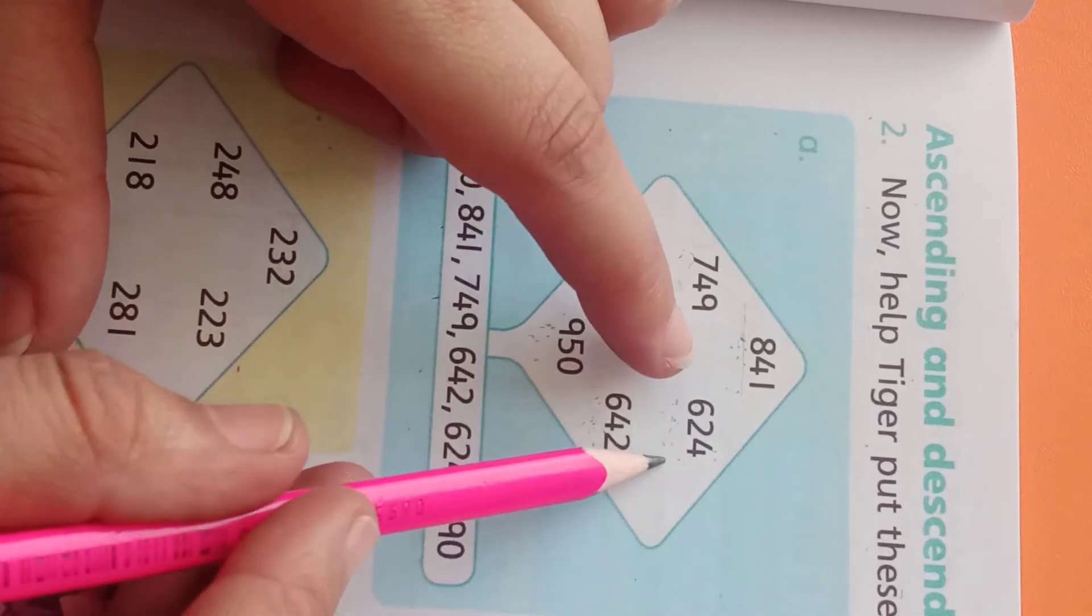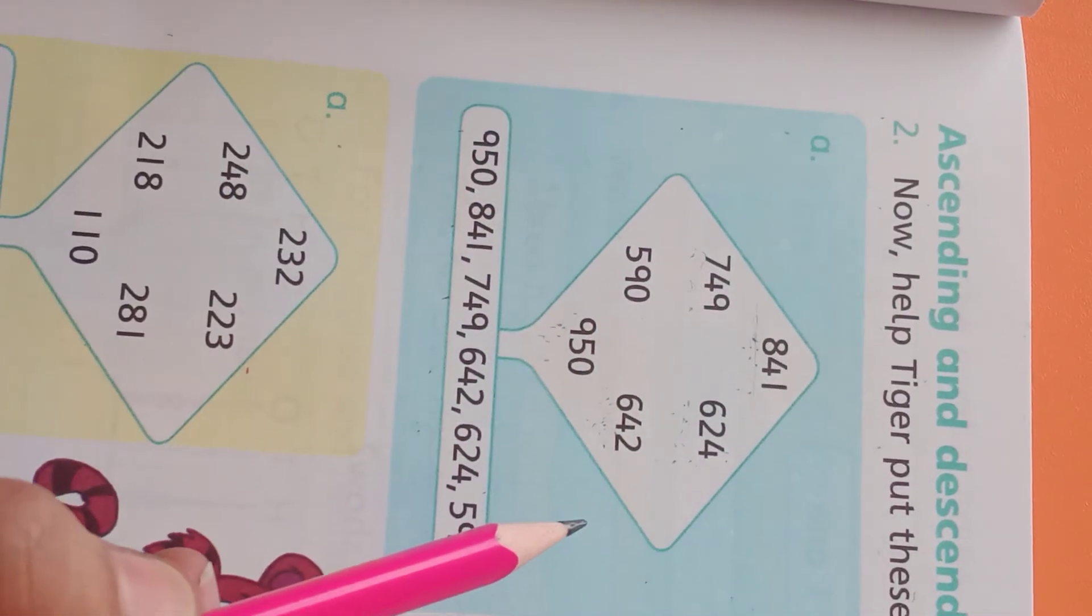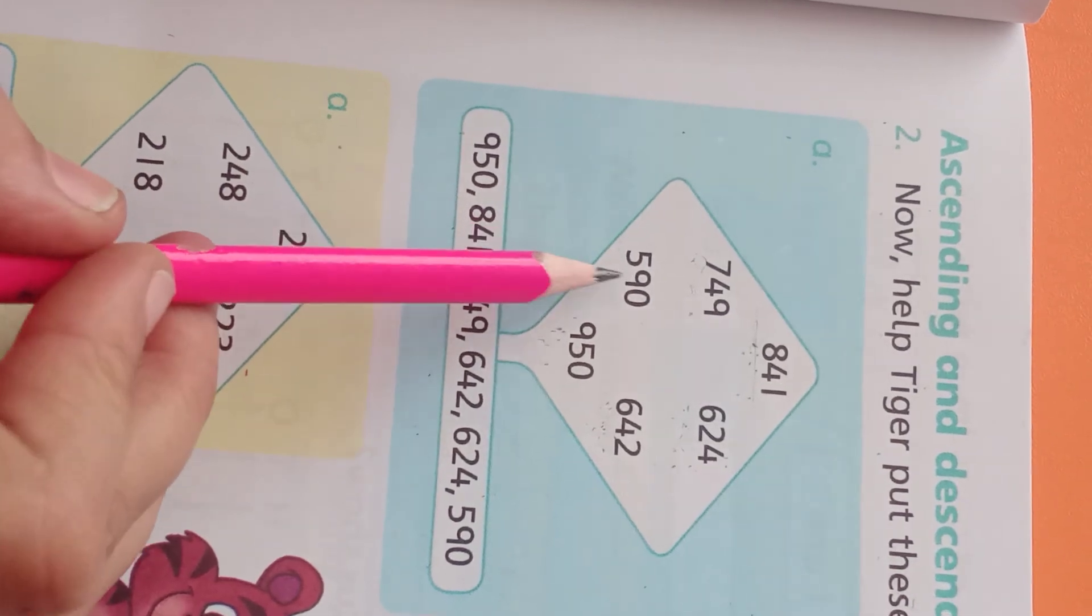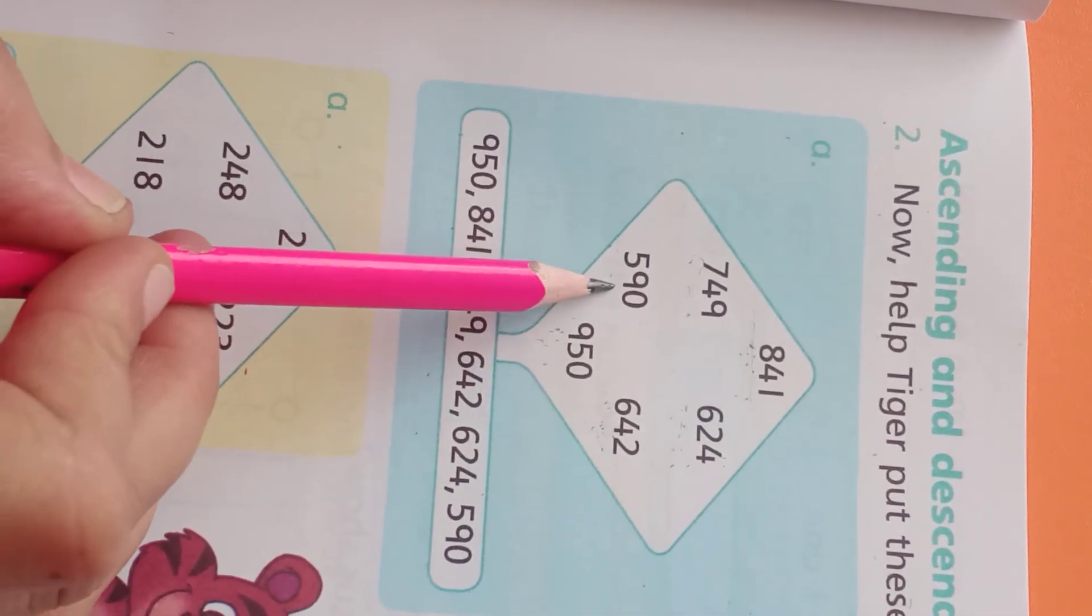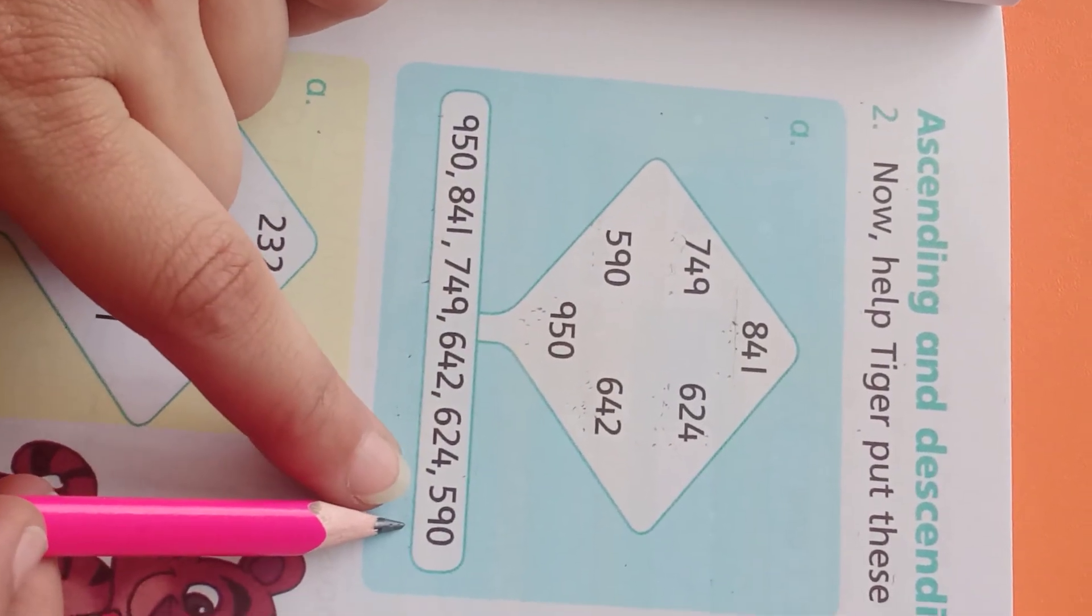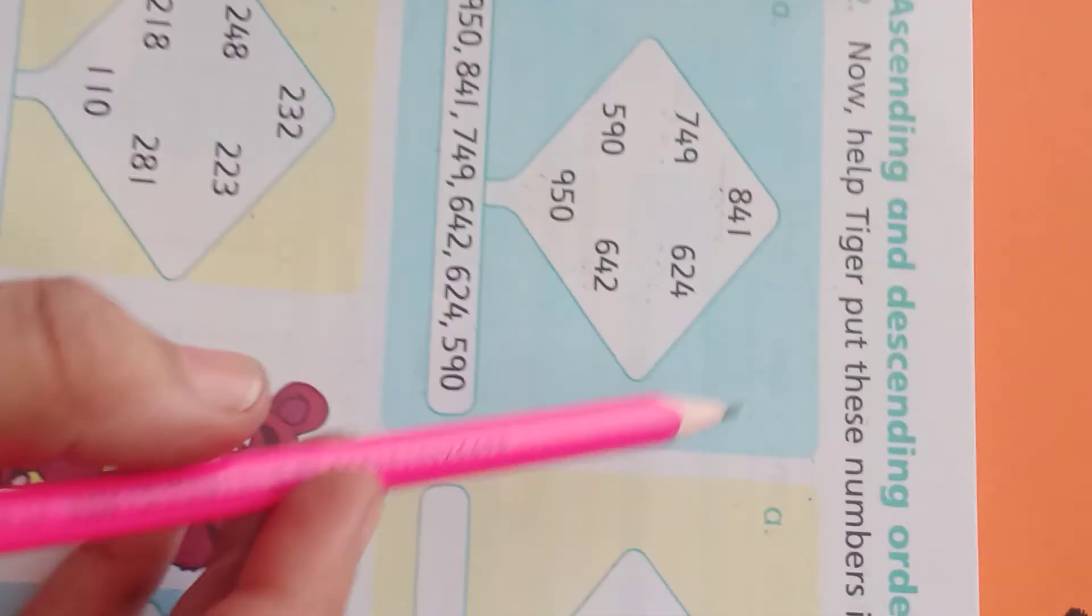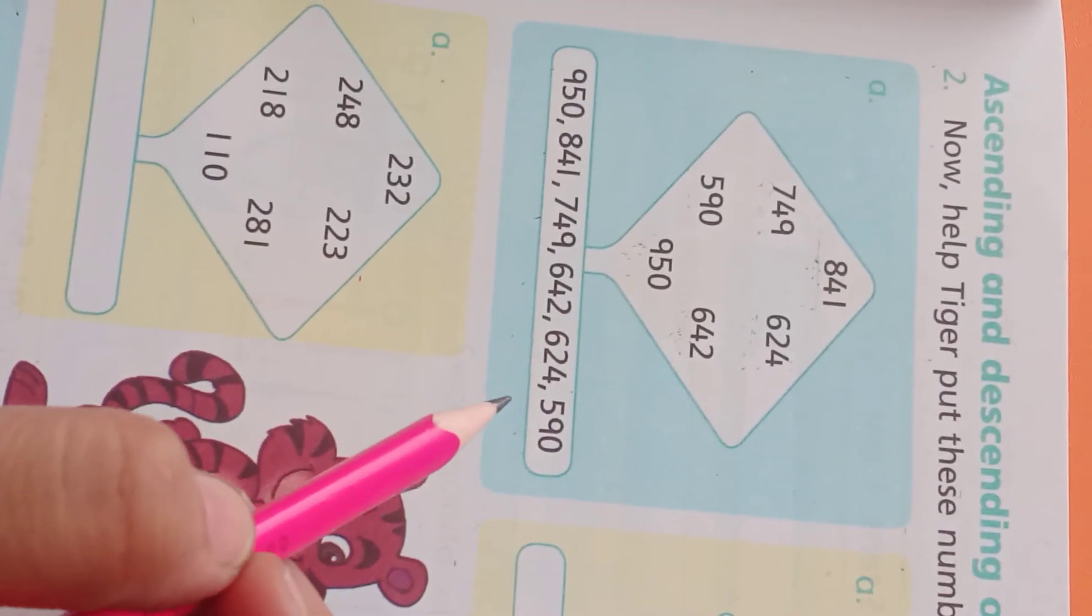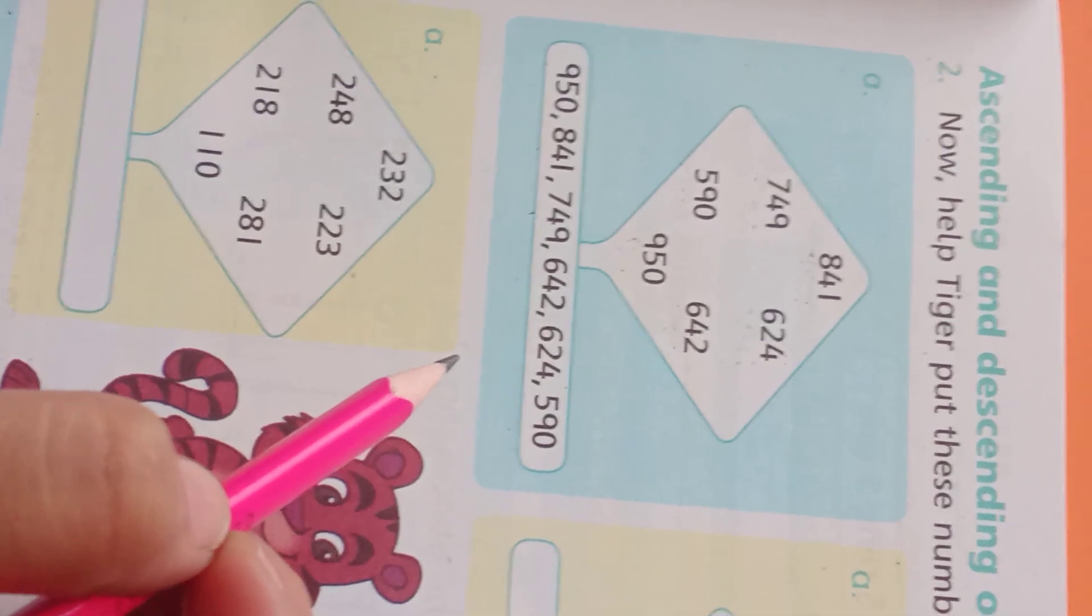And after that, the last amount we have remaining is 590. 590 is the lowest number and here our question ends. And students, this was our procedure for doing descending order. Hope students that you understood. Allah Hafiz.